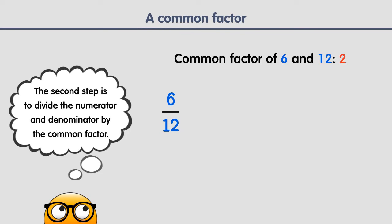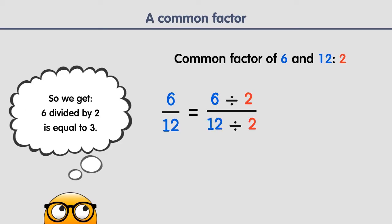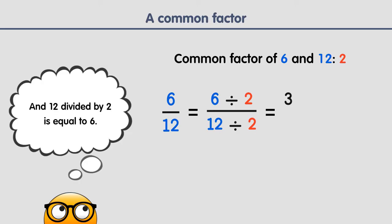The second step is to divide the numerator and denominator by the common factor. On dividing the numerator and denominator by 2, we get: 6 divided by 2 is equal to 3, and 12 divided by 2 is equal to 6. The fraction reduces to 3 sixths.